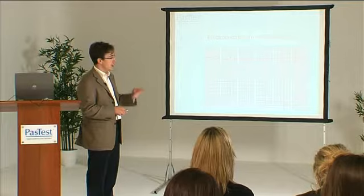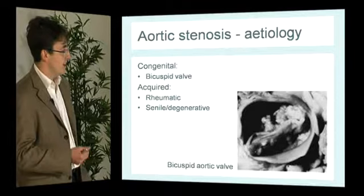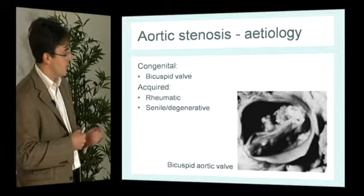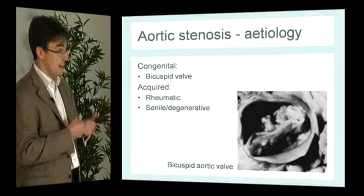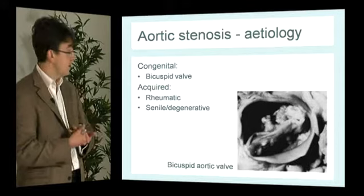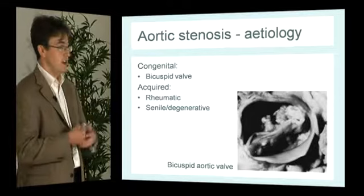What is the aetiology of aortic stenosis? Here you can see a bicuspid aortic valve which has become heavily calcified — there's a very small orifice left for blood to flow through. That's a congenital cause: two rather than three valve leaflets. More commonly it may be due to rheumatic fever — long after the initial insult the patient develops valvular abnormality. Probably the most common cause is senile or degenerative disease — calcification of a tricuspid valve which simply doesn't open properly.